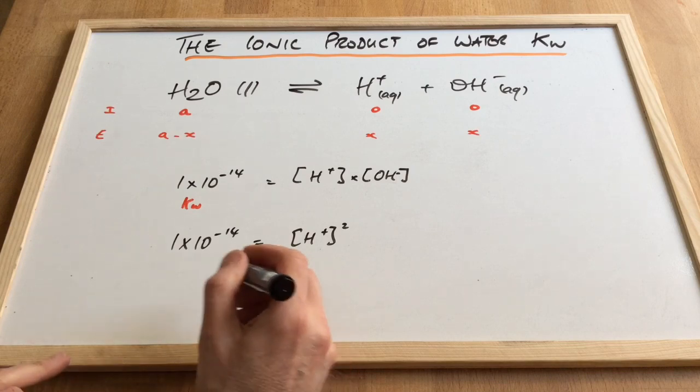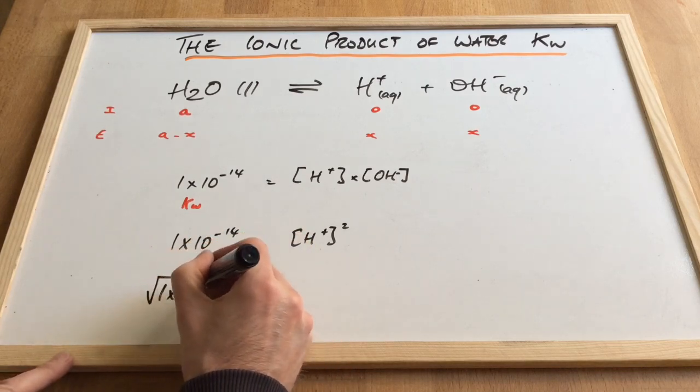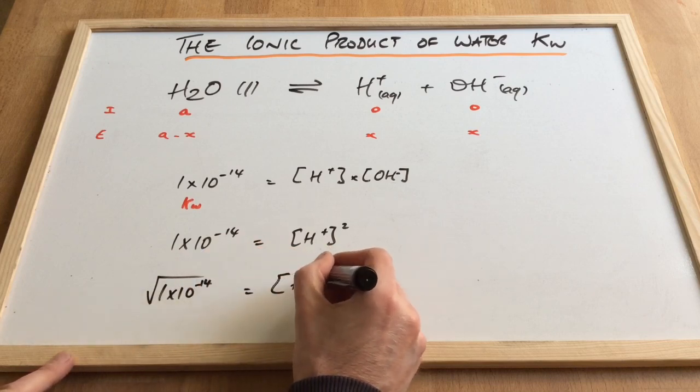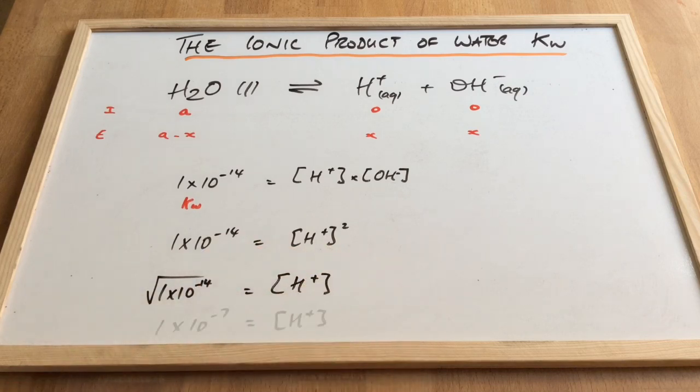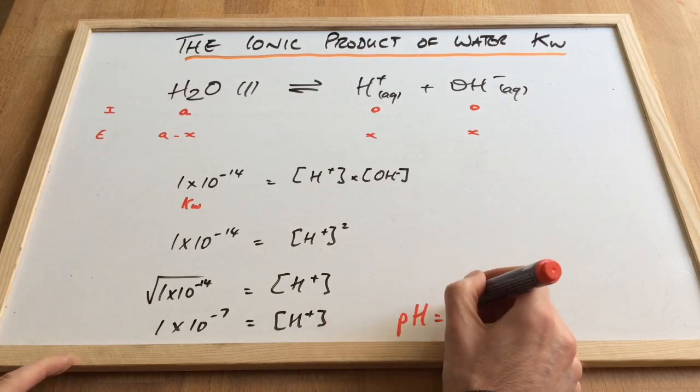So what do we do? We're going to have to square root 1 times 10 to the minus 14. And that's going to be the concentration of H+. So that comes out at 1 times 10 to the minus 7 for the concentration of H+. And when you minus log that, you get a pH of 7.